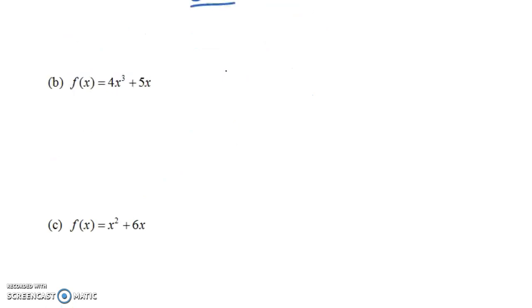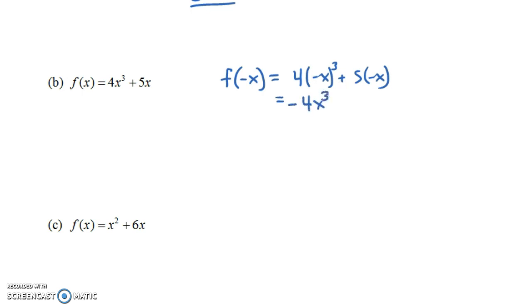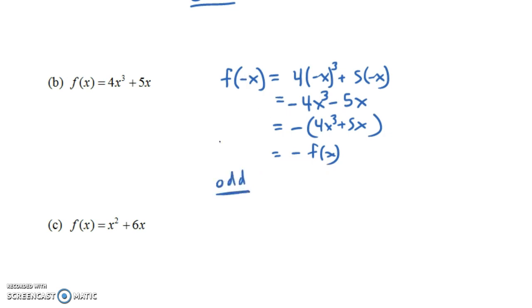In part b, we'll also find f of negative x. f of x is 4x cubed plus 5x. So f of negative x is going to be 4 times negative x cubed plus 5 times negative x — we've replaced each x with negative x. Notice that negative x quantity cubed equals negative x times negative x times negative x. You end up with three negatives, so the negative remains — you have an odd number of negatives. So this is the same as negative 4x cubed, and then plus 5 times negative x, which we write as minus 5x. Notice this is the same as the negative of your original function — the negative of 4x cubed plus 5x — so this is negative f of x. f of negative x was not equal to f of x; it equaled negative f of x. So this function is odd.